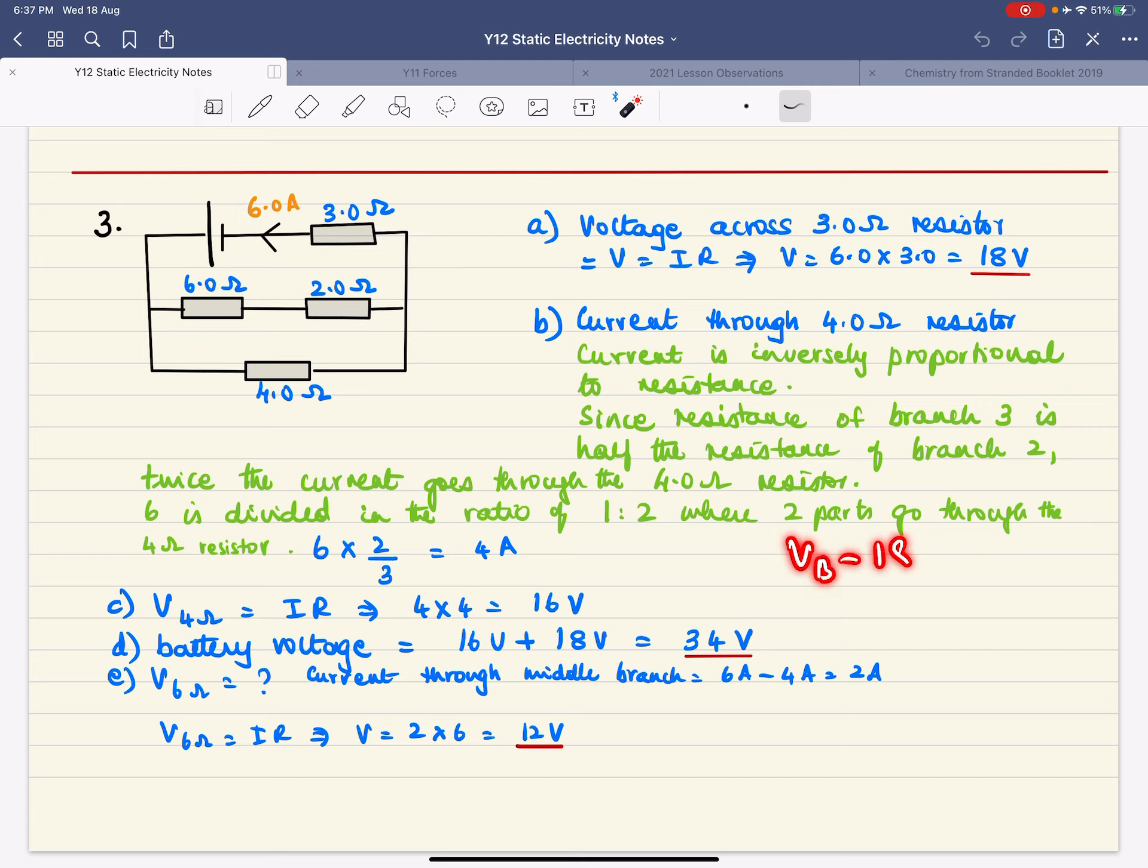So VB is equal to 16 plus 18, that's 34 volts. Then it says what is the voltage across the 6 ohm resistor?